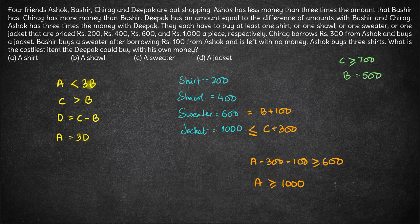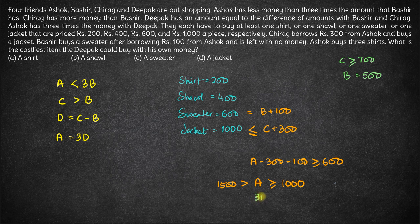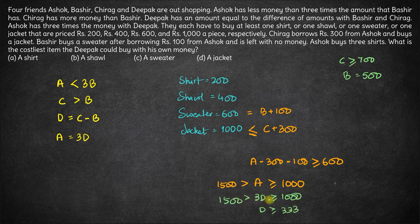We also know A is less than 3 times B, and B is 500, so A is definitely less than 1500. And since A is equal to 3D, we get 3D is greater than or equal to 1000 but less than 1500. Dividing by 3, D is definitely greater than 333.33 rupees but definitely less than 500 rupees.